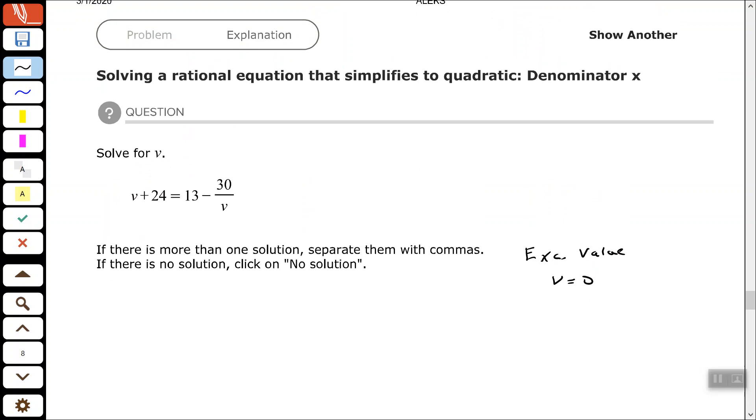All right, the least common multiple of my denominators is also V. So let's multiply both sides by V. Okay, so on the left hand side, we can go ahead and use our distributive property that gives us V squared plus 24 times V. On the right hand side, if I use my distributive property, that's 13 times V. And then if I multiply 30 over V times V, you see the Vs will cancel each other out. So that just leaves me with minus 30.